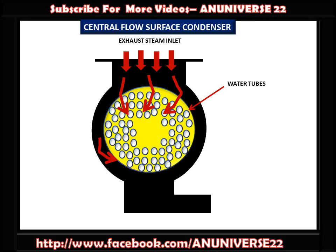The difference between the Central Flow and the downflow surface condenser is that in the middle of the water tubes there are no water tubes — basically there is a blank space for the entering exhaust stream. The suction pipe of the air extraction pump is placed at the center of the tube nest, so there are no water tubes in the middle.